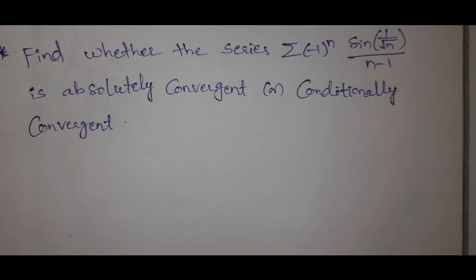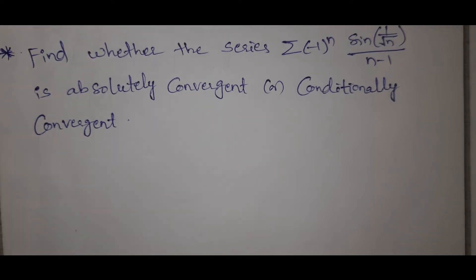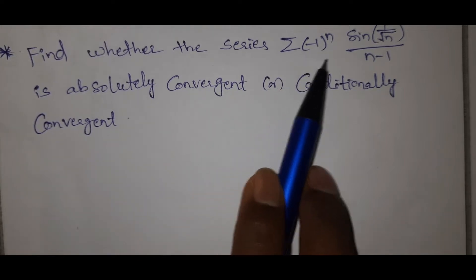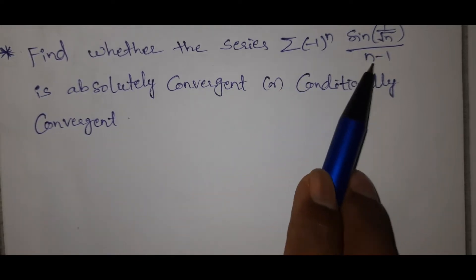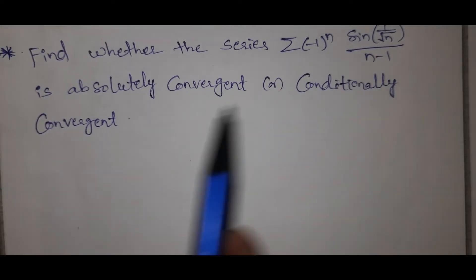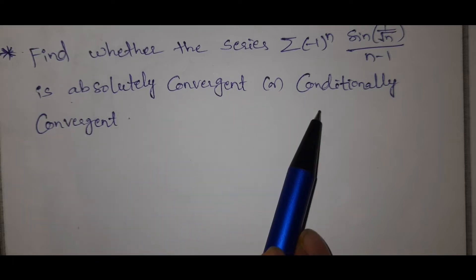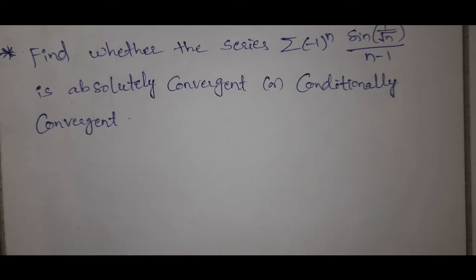The absolute convergence and conditional convergence problem is a very important problem. Find whether the series summation (-1)^n · sin(1/√n) / (n-1) is absolutely convergent or conditionally convergent.